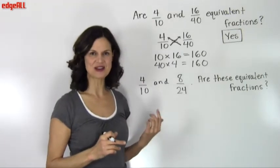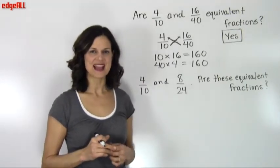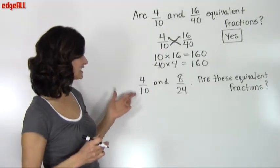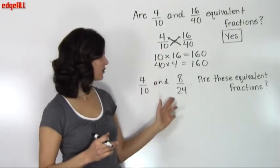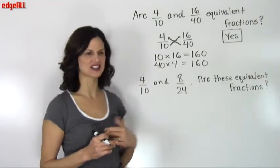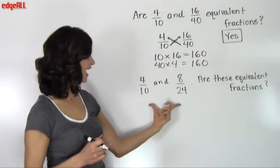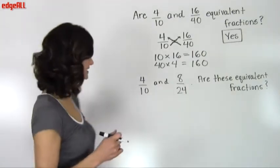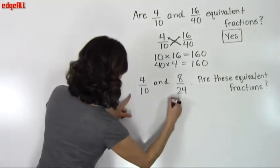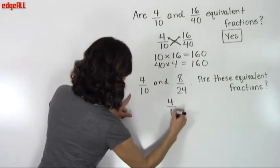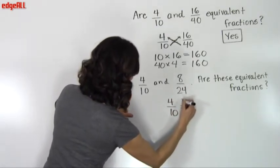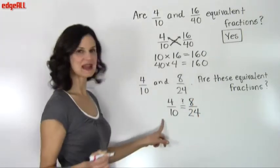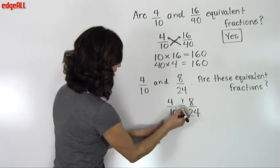My second example is similar. It asks me if 4 tenths and 8 twenty fourths are equivalent fractions. So they've given me two fractions here and the question is, are these equivalent fractions? So again, I'm going to set up my 4 over 10 right next to 8 over 24 and I'm simply going to do my cross multiplication.